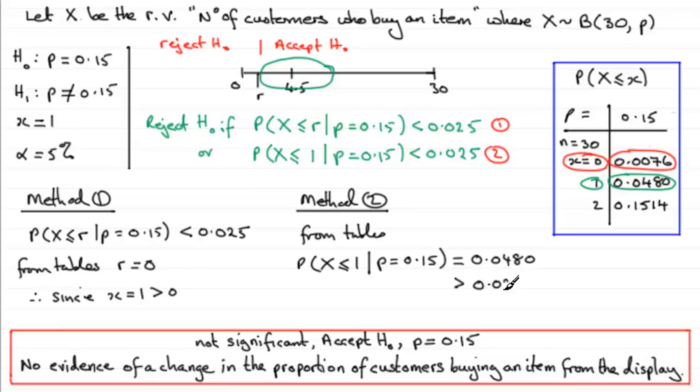And how does that compare to 0.025 - two and a half percent? Well, clearly it's greater - it's greater than 0.025. And we said we would reject the null hypothesis H₀ if that probability were less than 0.025. Well, clearly it's not, so therefore we arrived at exactly the same result: that it's not significant, accept H₀, proportion p is 0.15.